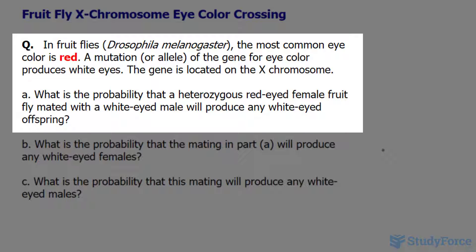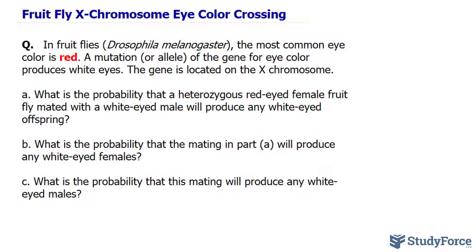Part A asks: what is the probability that a heterozygous red-eyed fruit fly mated with a white-eyed male will produce any white-eyed offspring? Let's begin by writing out the genotype of a red-eyed female. We're told it's heterozygous and females have two X chromosomes, so it will have one allele for red color and one allele for white color. Let's represent the dominant allele as W-plus and the recessive allele as W. You could also represent it as capital R and little r or any other combination of letters.